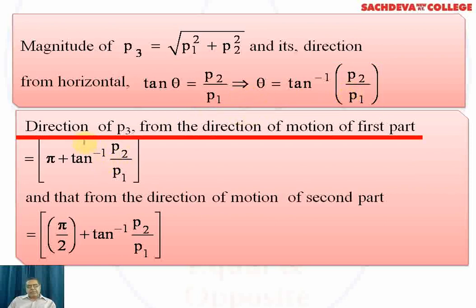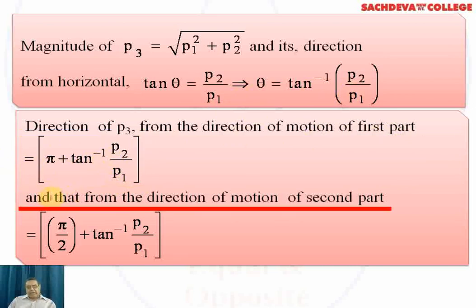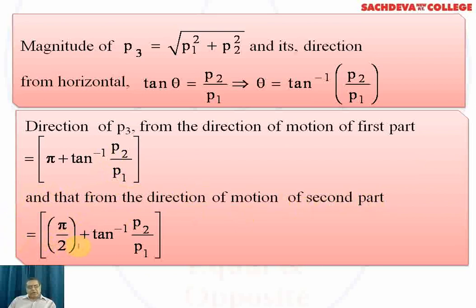The direction of p3 measured from the direction of motion of the first part is π + tan⁻¹(p2/p1), and from the direction of motion of the second part it is inclined at π/2 + tan⁻¹(p2/p1).